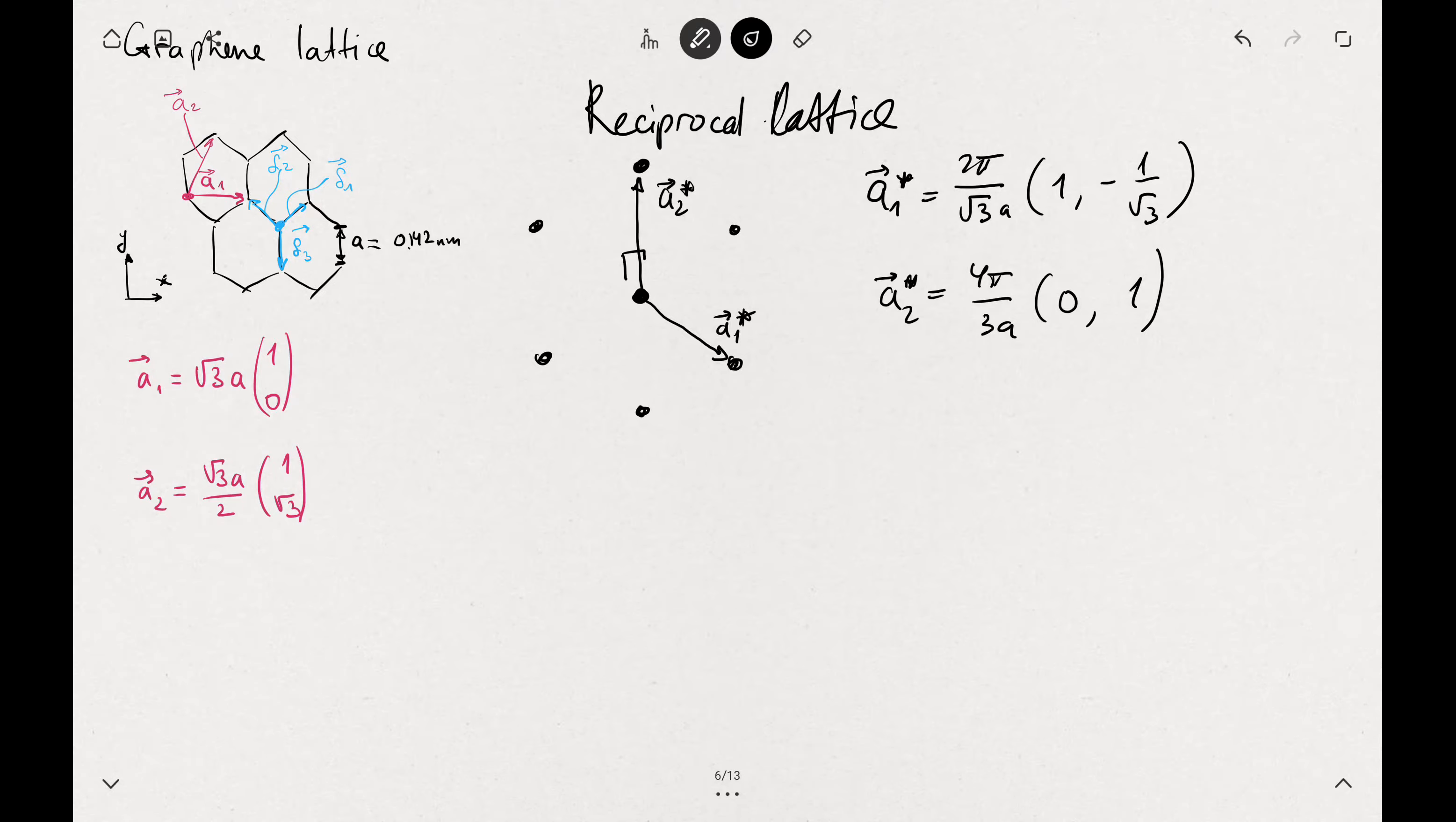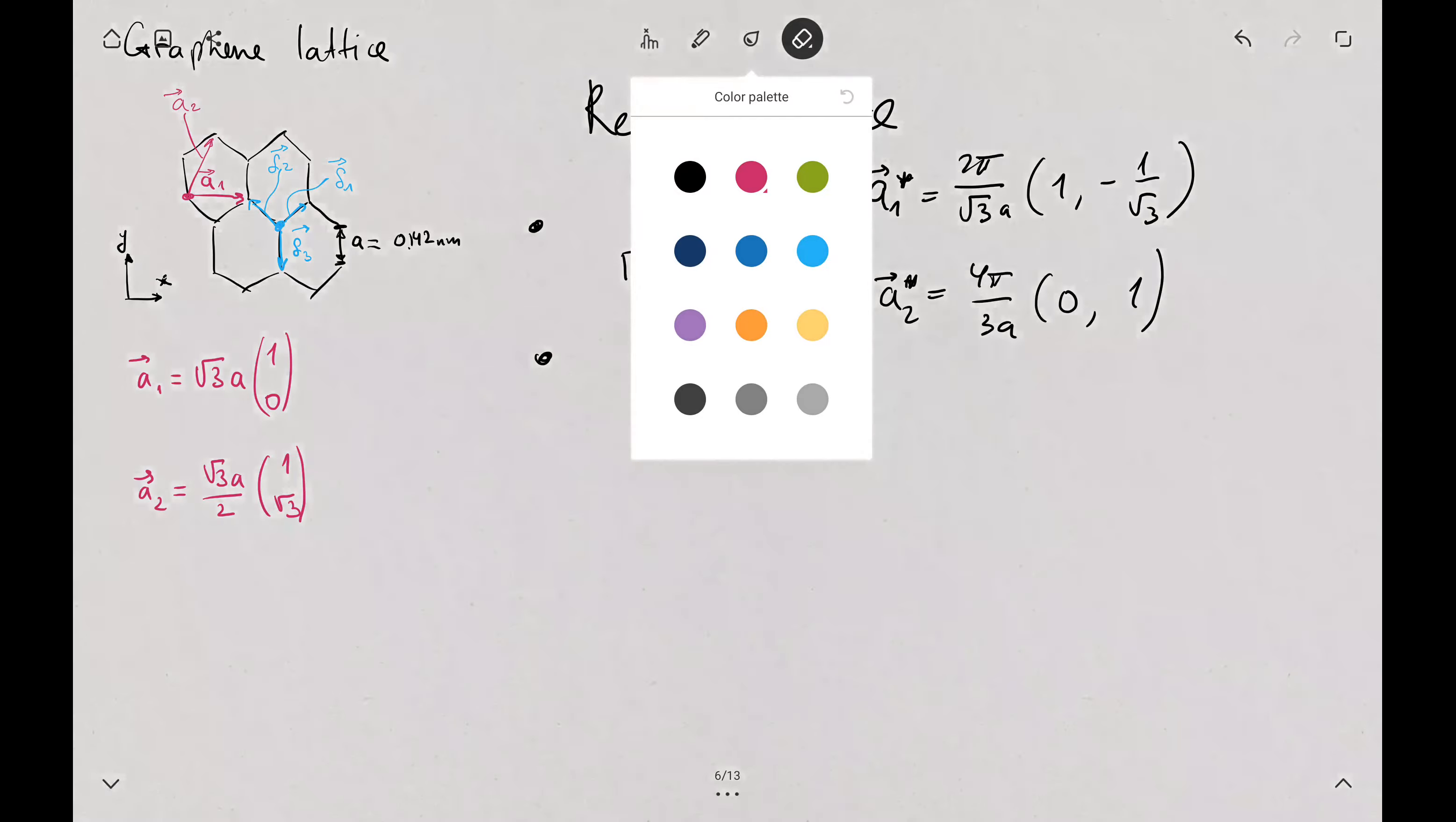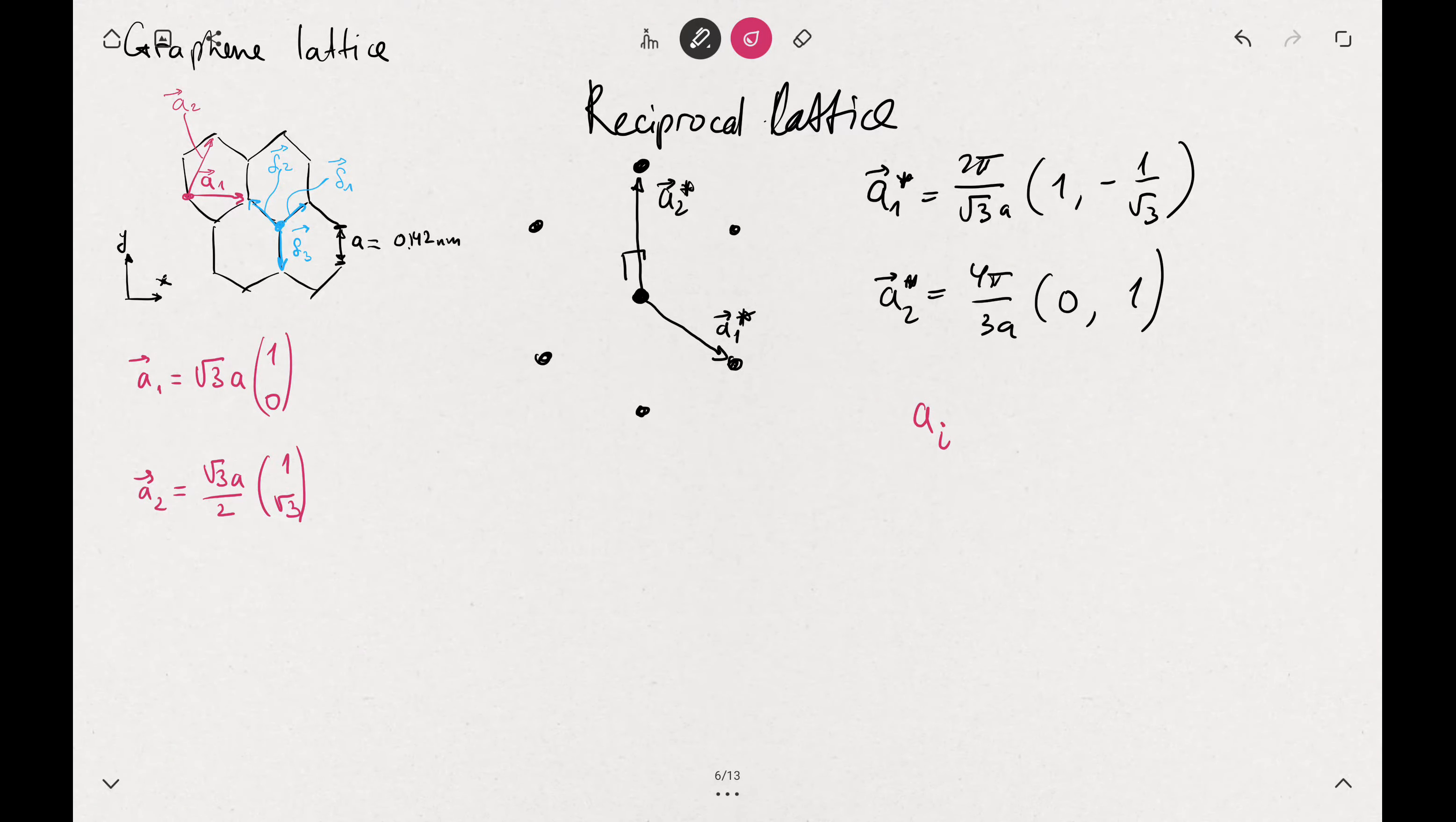The definition is the following: Ai dot Aj star equals 2π delta ij. This is the Kronecker delta, so if i equals j it's 1, if i not equals j it's 0. That's the reciprocity relationship when you have this reciprocal axis. This is probably familiar if you were working on crystallography. The Bragg reflections are usually considered in the reciprocal space when you have this matching conditions.